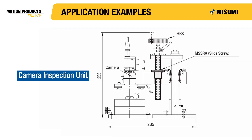Not all lead screw applications need to be large. Shown here is a camera inspection unit where a slide screw is used to move a camera assembly up and down. A slide screw is simply a smaller, less expensive lead screw that Misumi sells, and as such, is perfect for applications like this. In this application, backlash is not a problem, as gravity is always loading the nut against a thread, and the movement of the entire mechanism is very smooth, resulting in less vibration that the camera could pick up.